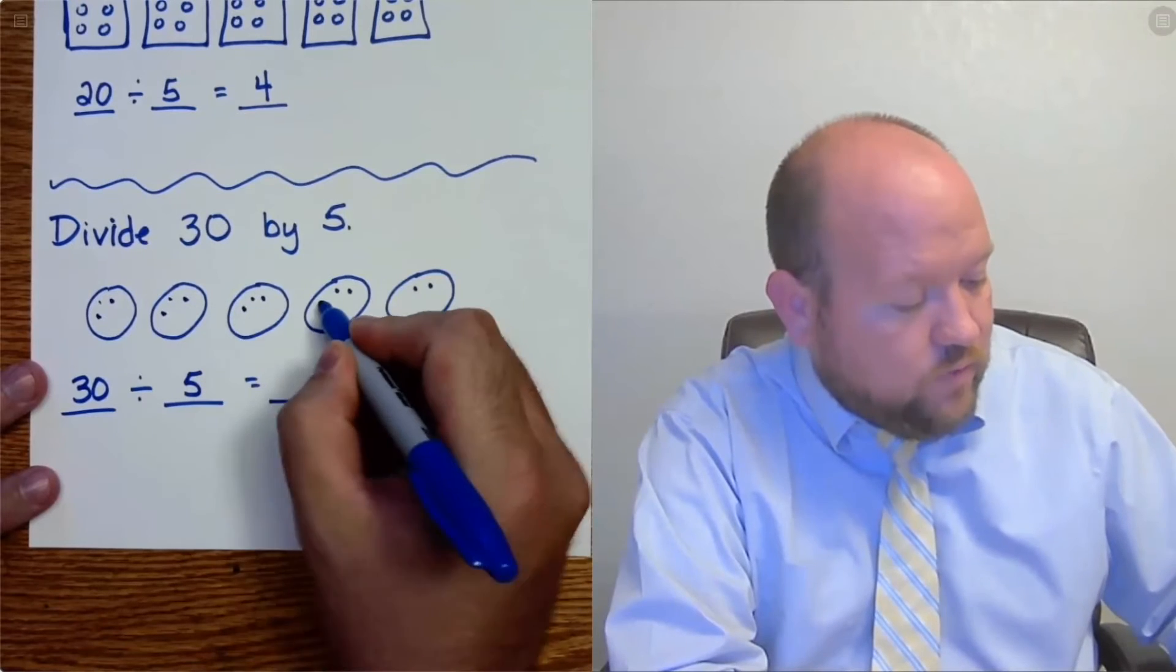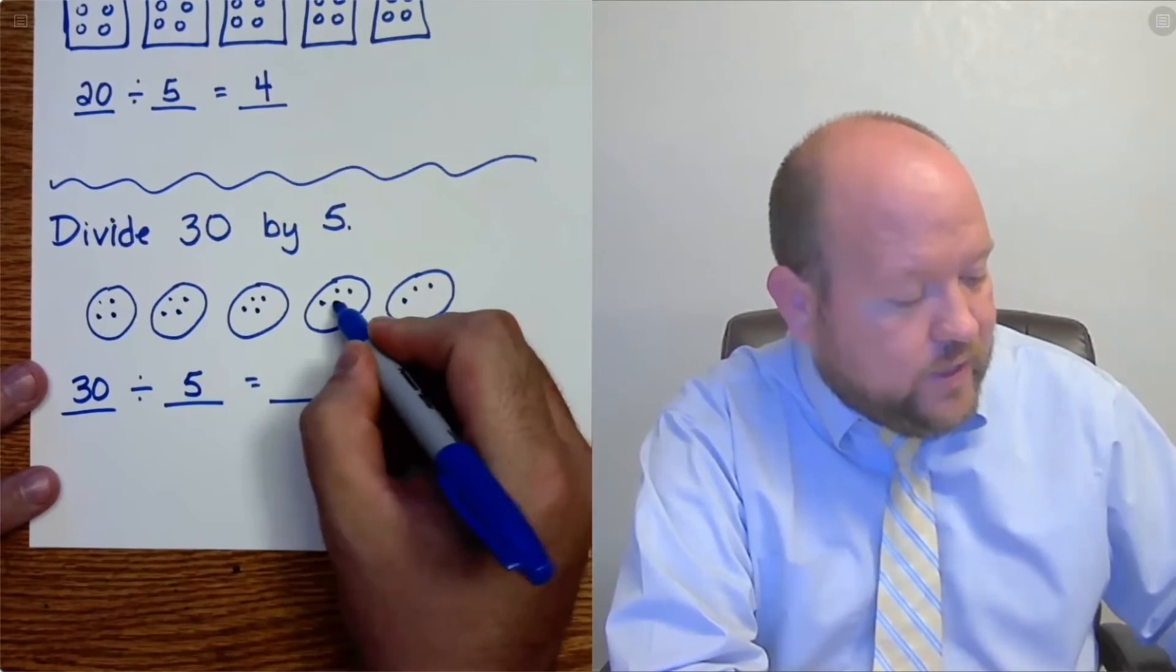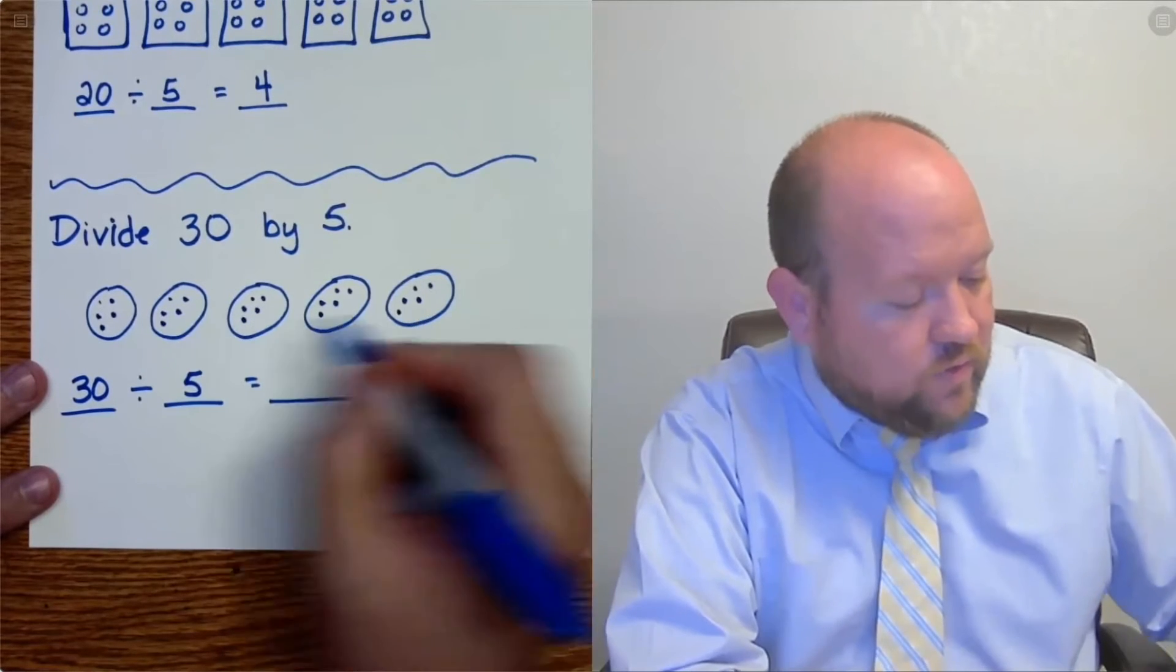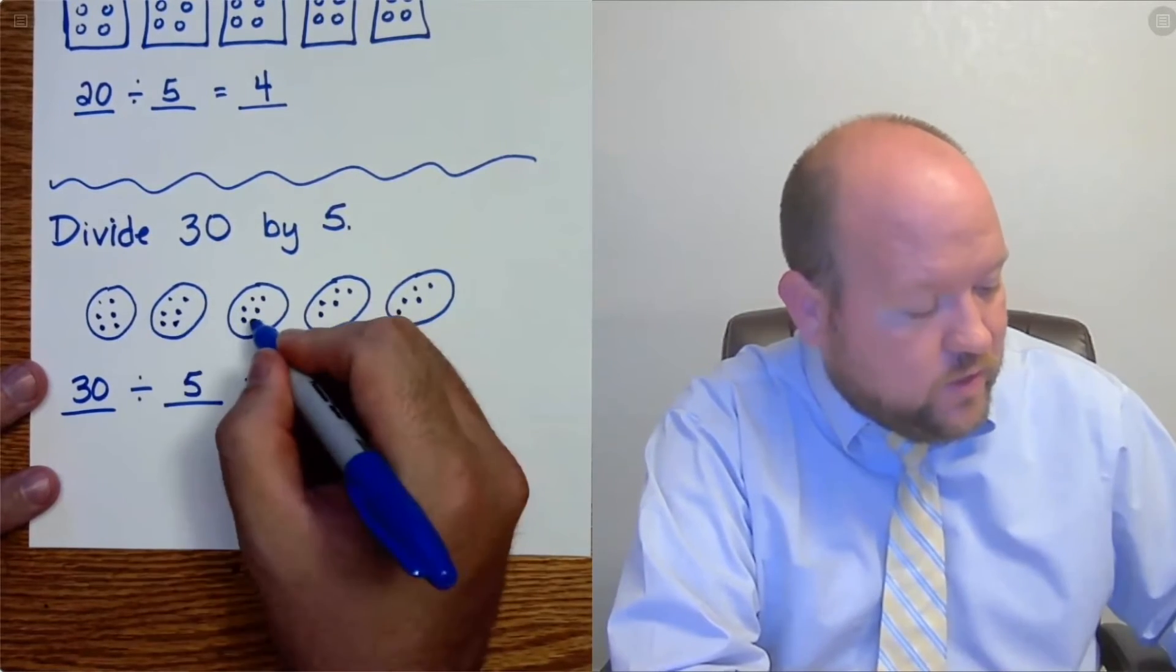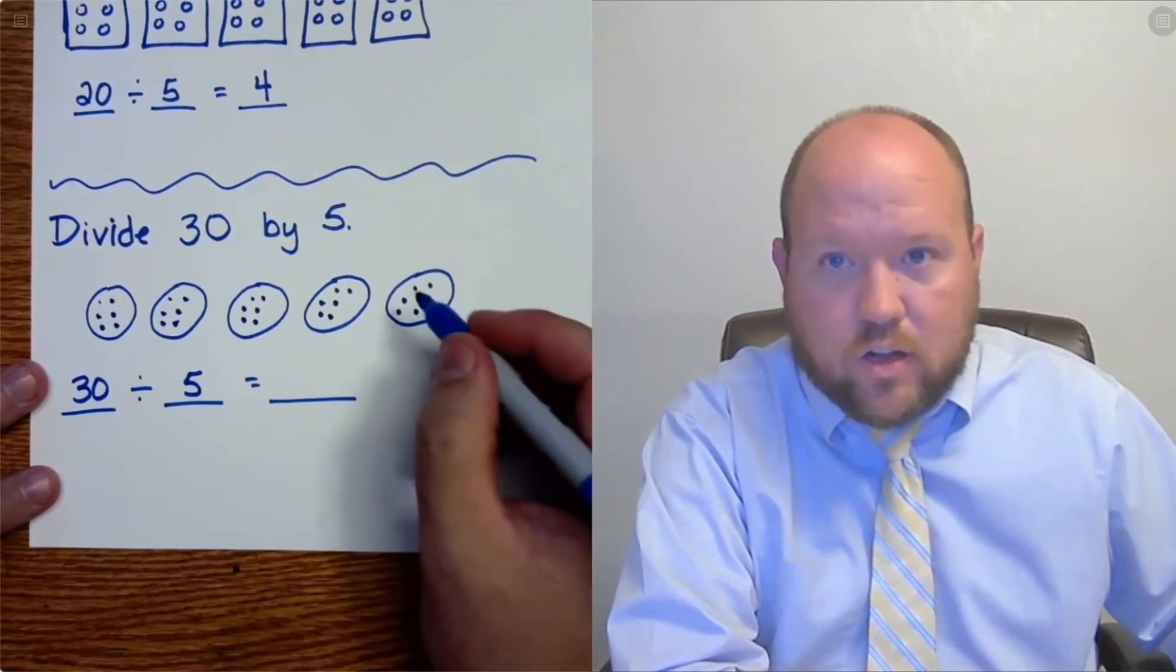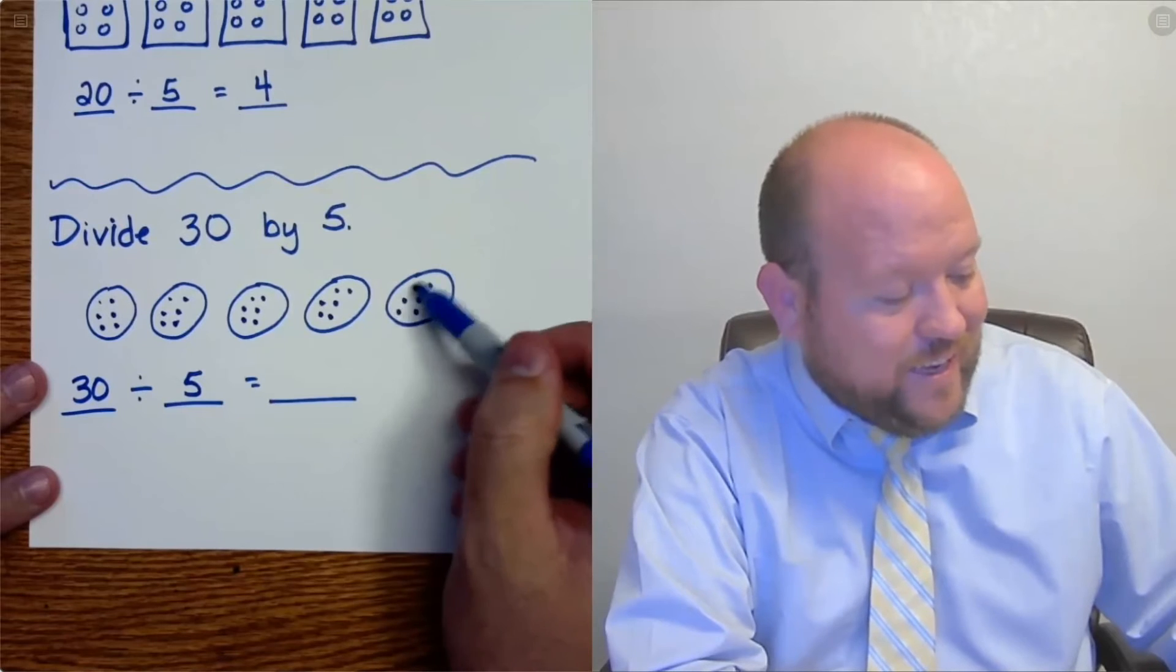12, 13, 14, 15, 16, 17, 18, 19, 20, 21, 22, 23, 24, 25, 26, 27, 28, 29, 30. All right, so now I got to 30. I look at how many are in each circle and there are 6 in each circle.